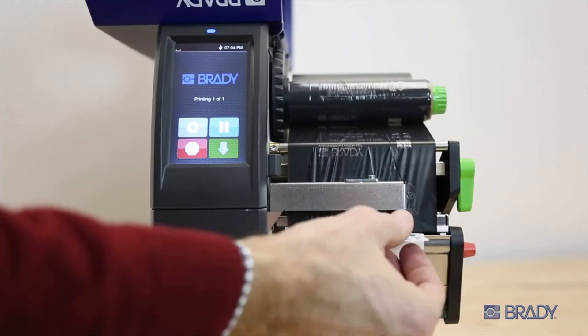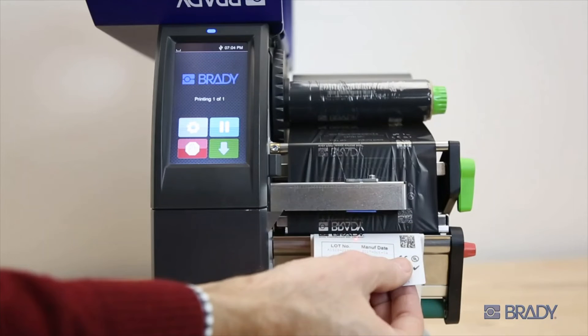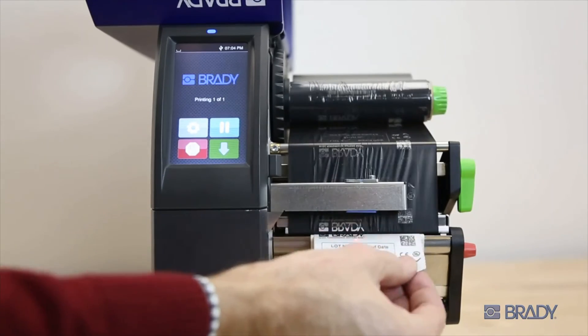When you send your label job to the printer, the first label in the series will print and present itself. Notice the sensor will shine a red dot on the label to detect when you remove it, and then will automatically print, peel, and present the next label in the series.